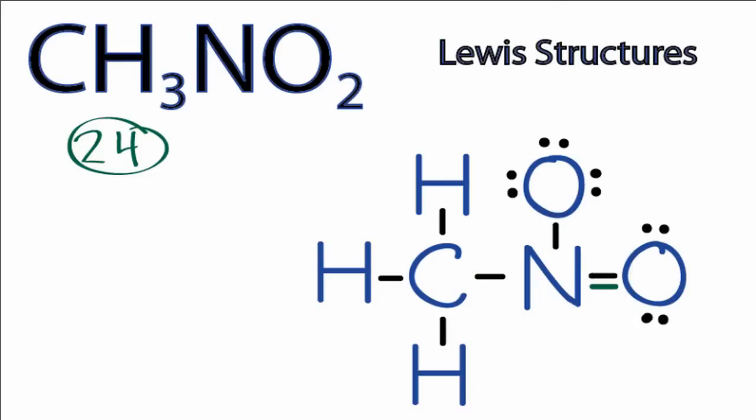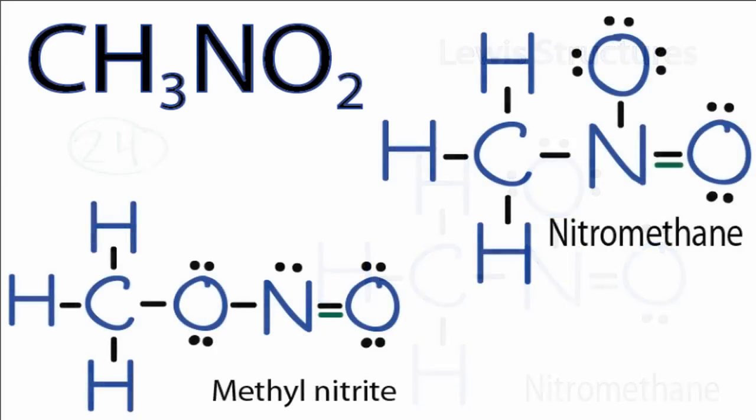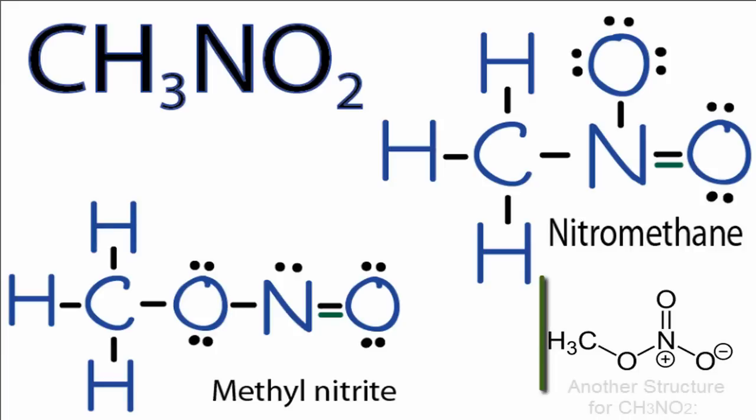So this is one Lewis structure for CH3NO2. It's called nitromethane. You could also draw the structure methyl nitrite as shown here. It's using the same number of valence electrons. Its formula is CH3NO2, but it's drawn differently. It has a different arrangement of atoms and valence electrons. So those are two possible structures for CH3NO2.